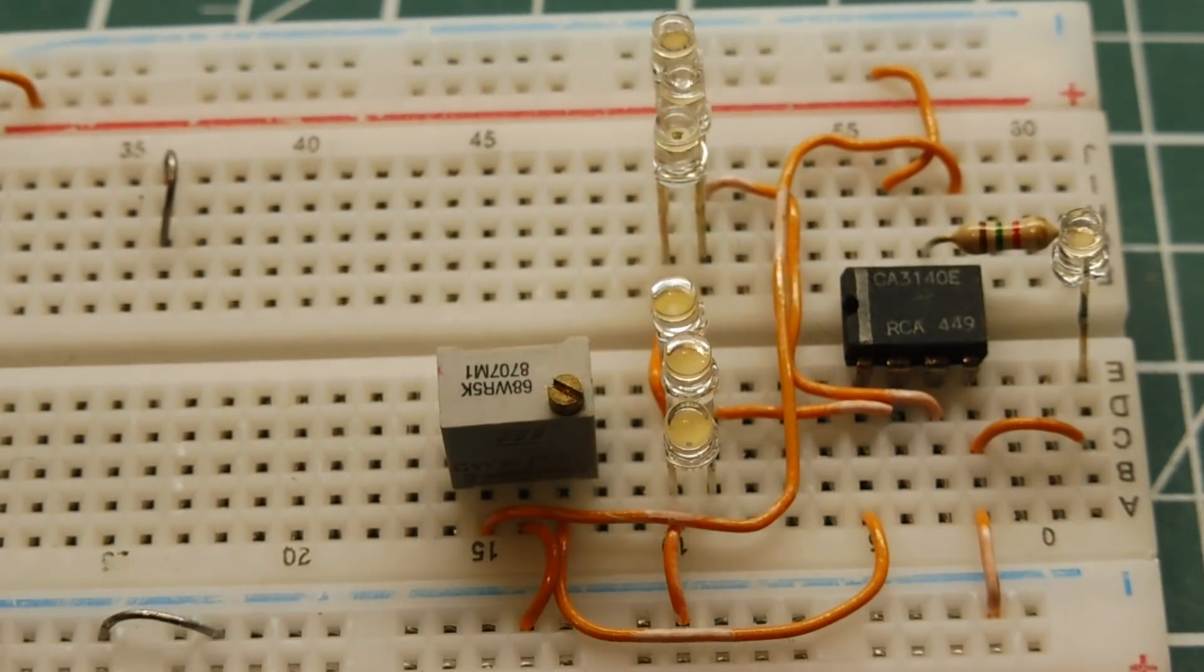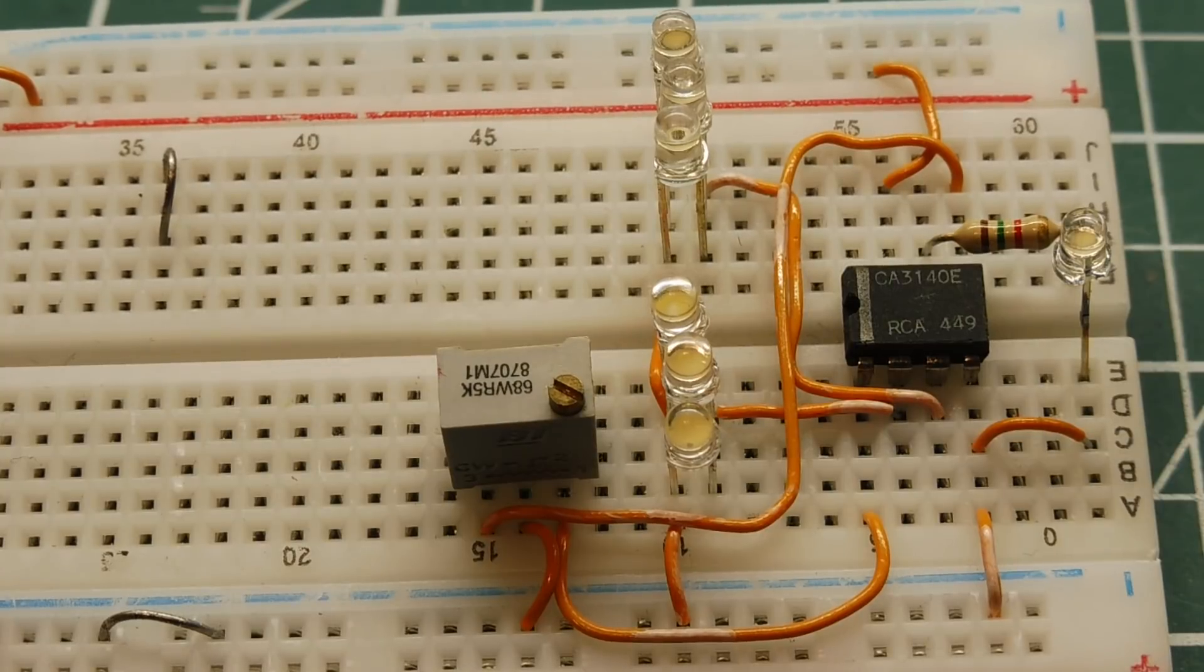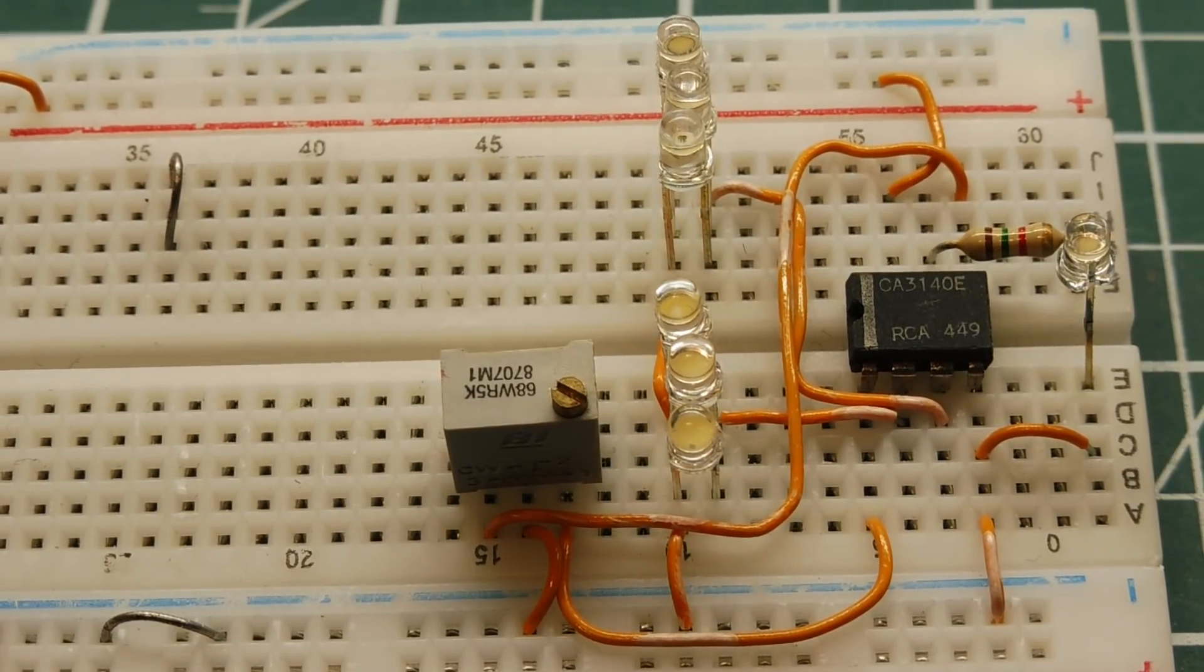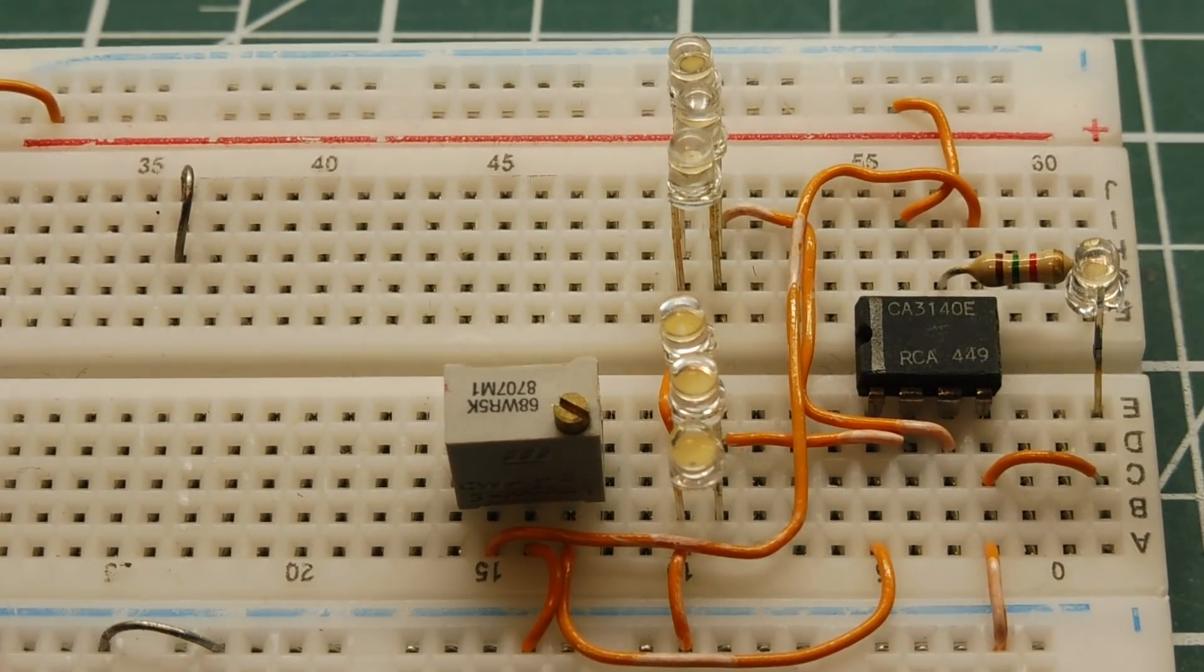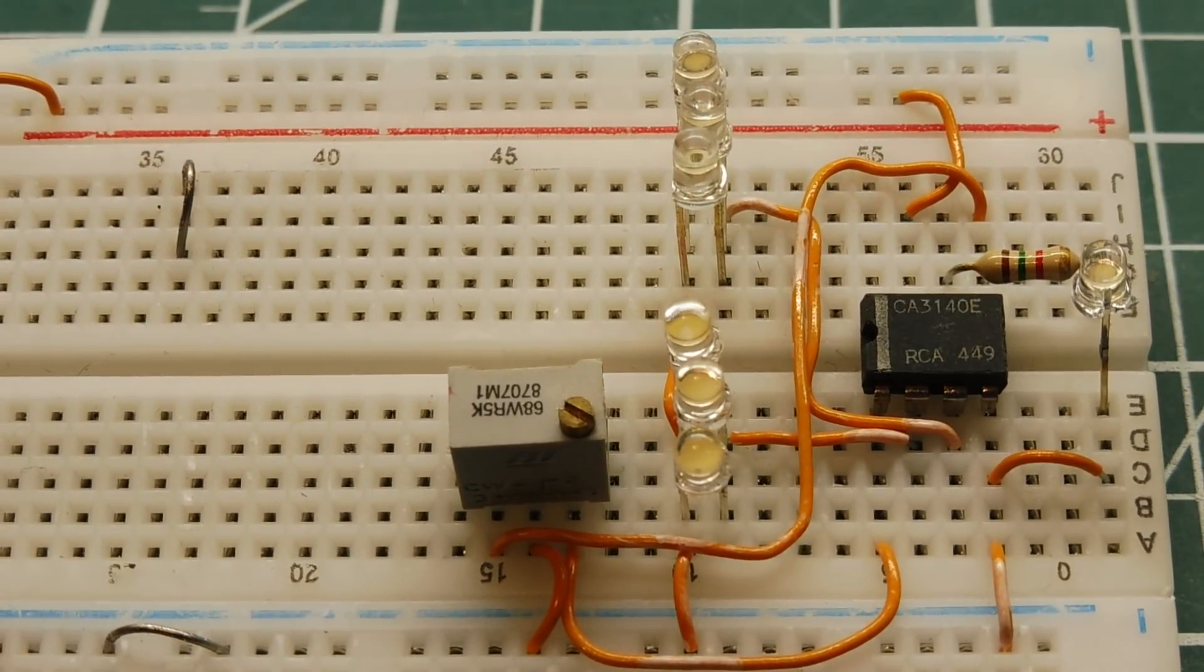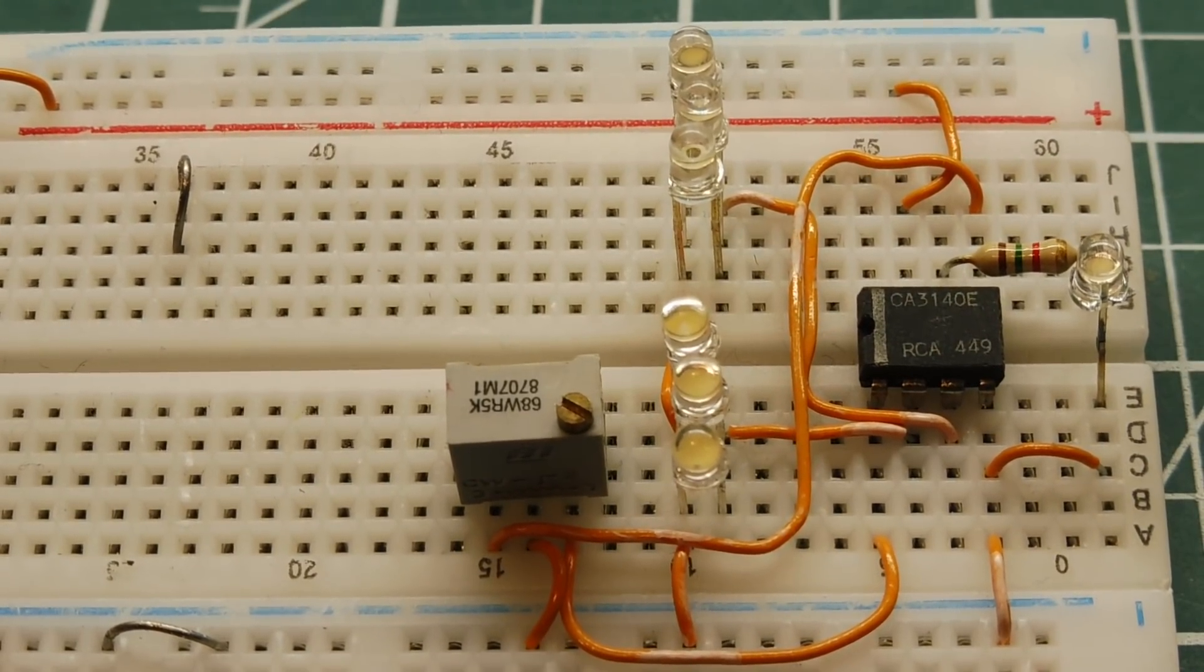So now this circuit isn't very practical, because you could buy photo transistors or photo diodes that are designed to do the job. They're designed to detect light. But if you're a school teacher and you want to do a demonstration, you can set up this little circuit so you can demonstrate how an LED can detect light.